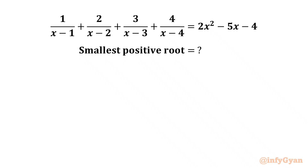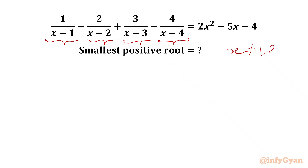Let's get started by writing that denominators cannot be 0. So x minus 2 cannot be 0, x minus 3 cannot be 0, x minus 4 cannot be 0. So x cannot be 1, 2, 3, or 4.